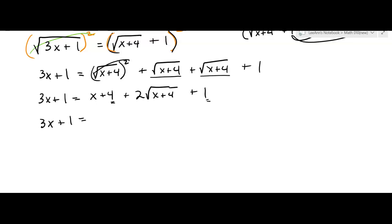Plus that 1. We put the 4 and the 1 together since they're on the same side, giving us x plus 5 plus 2 times the square root of x plus 4. The good news is we now only have one radical in the equation. The bad news is we have to isolate it and square both sides again.